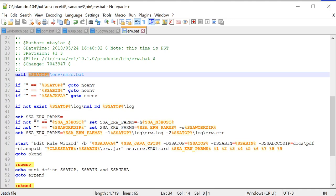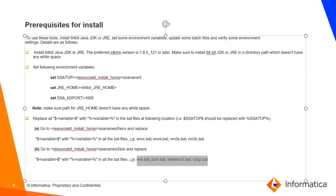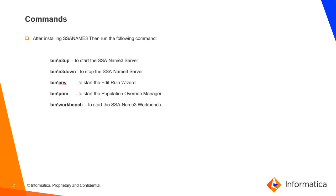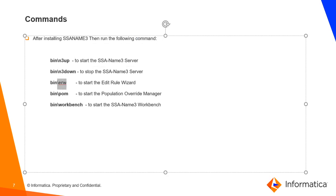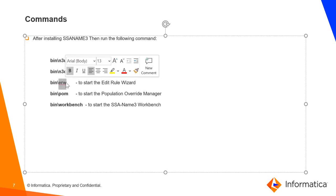Now let's launch the server. After installing SSNM3 and modifying the batch files with the respective environment variables, use these commands: N3UP to bring up the server, N3DOWN to bring down the server, and ERW to launch the Edit Rule Wizard UI tool — run this batch file from inside the bin directory.